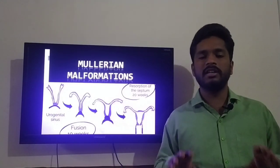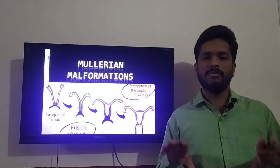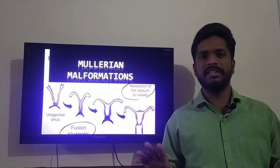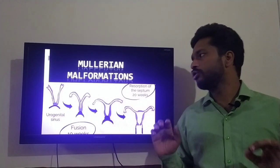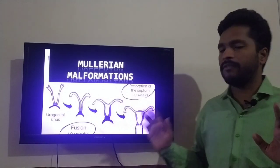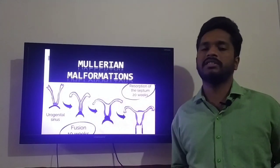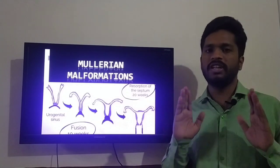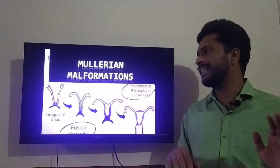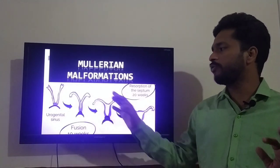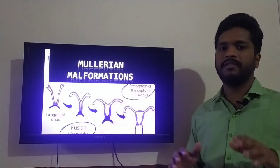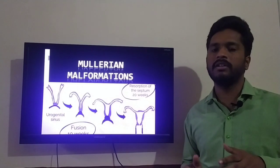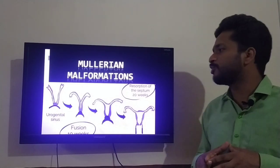Mullerian malformation is basically the anomalies occurring in the Mullerian duct. Before knowing the malformation, it is necessary to know that we have two Mullerian ducts — right and left. They both fuse and they form the internal organs of the female.